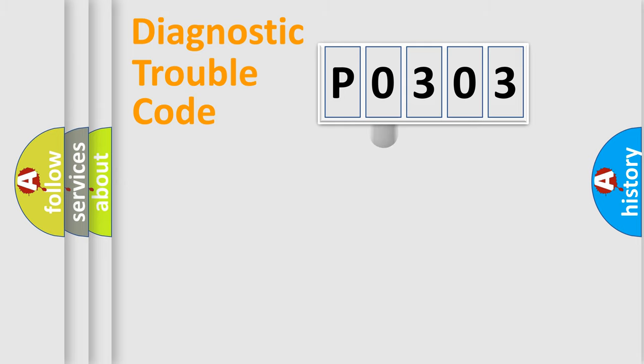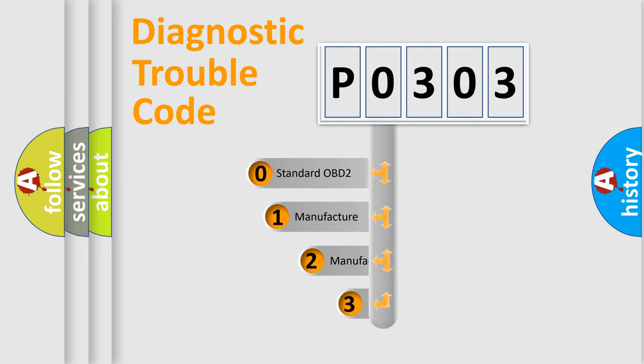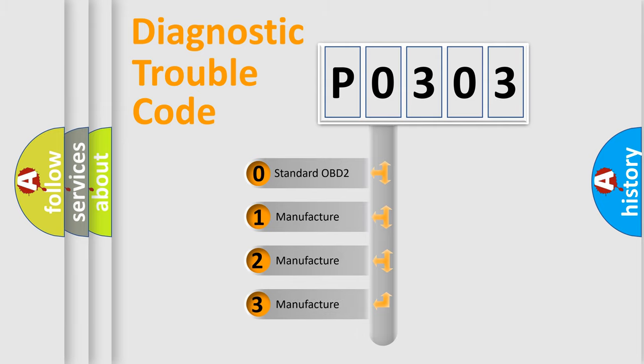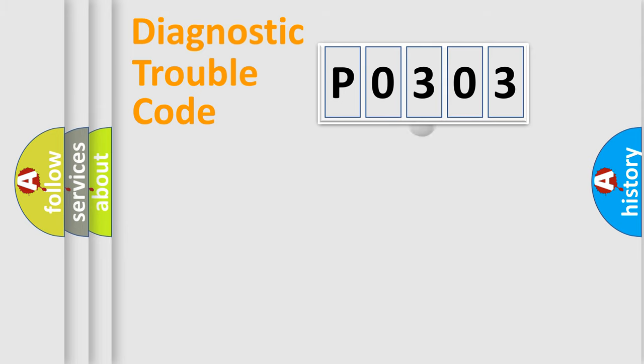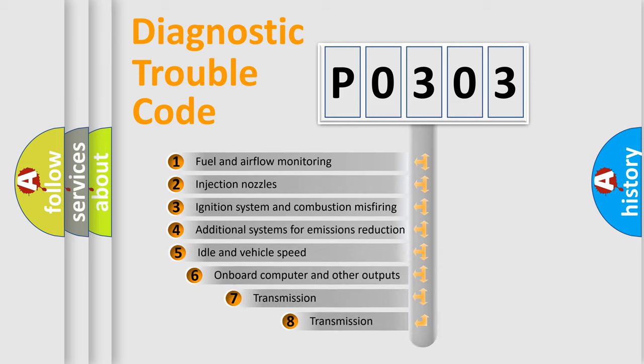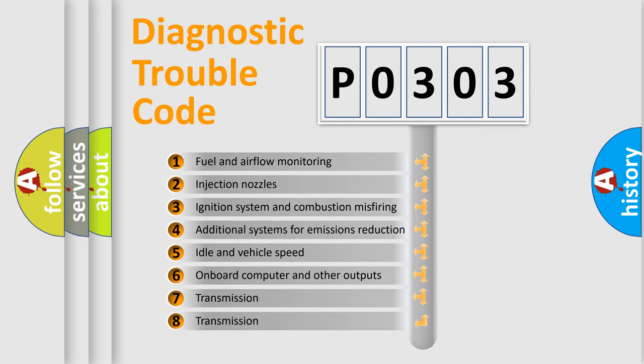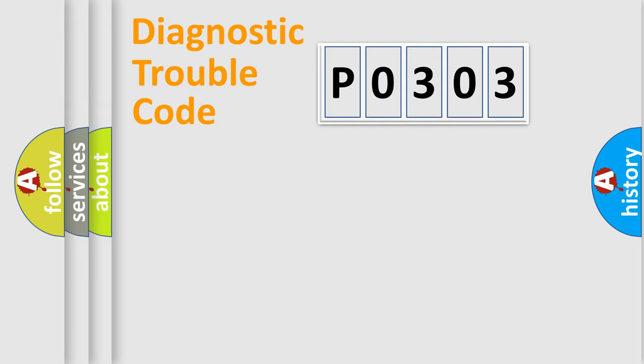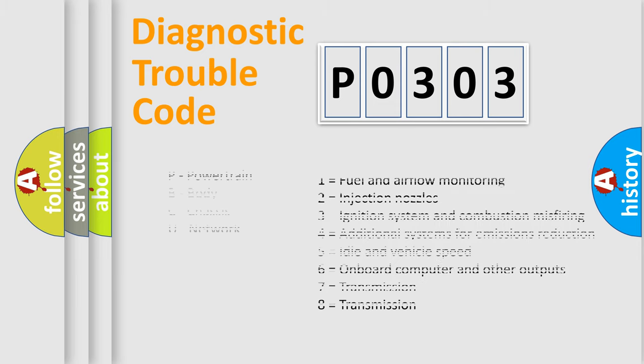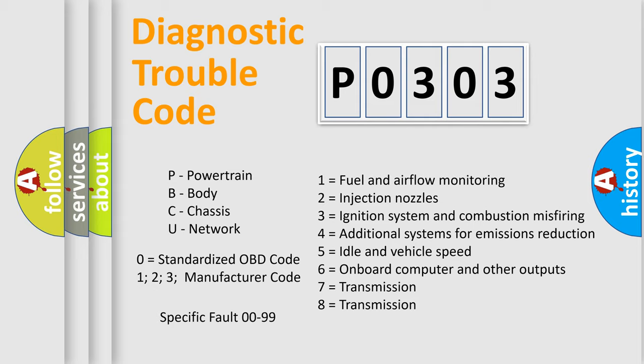This distribution is defined in the first character code. If the second character is expressed as zero, it is a standardized error. In the case of numbers 1, 2, 3, it is a car-specific error. The third character specifies a subset of errors. The distribution shown is valid only for the standardized DTC code. Only the last two characters define the specific fault of the group. Let's not forget that such a division is valid only if the second character code is expressed by the number zero.